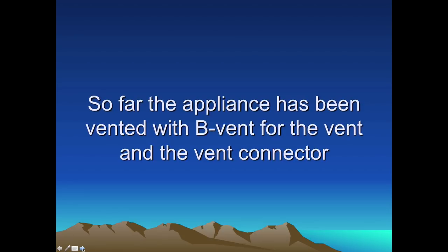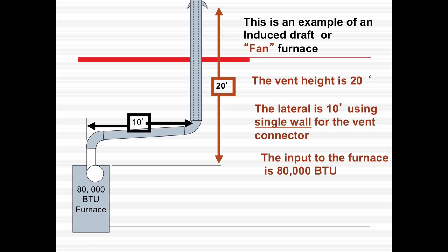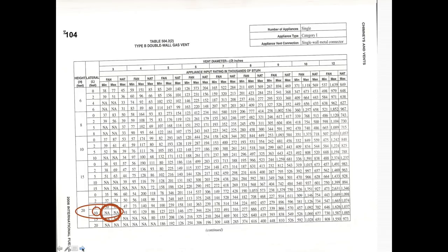So far, all we've done is use B vent for the vent and the vent connector. Let's change the vent connector to single wall with B vent for the vertical vent. This is an induced furnace, 80,000 BTUs, 10-foot lateral, 20-foot height. Onto the chart — now this is a different chart. Type B double wall gas vent, however over here it's a single appliance with a single wall metal connector. That's the difference.